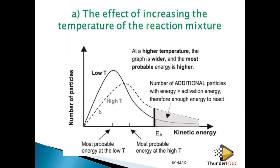When you increase the temperature, you are increasing the kinetic energy — you're increasing the speed at which the particles are moving. This causes more collisions. If the temperature is high, many more particles will have kinetic energy exceeding the activation energy, and they can be converted into products.